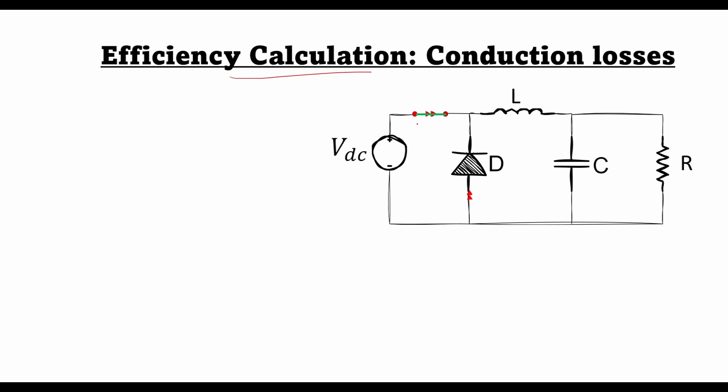Conduction losses occur due to the current flow in the transistor Q as well as in the diode D. These type of losses are also called the DC losses.